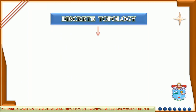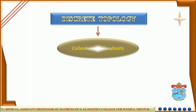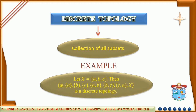Discrete topology is nothing but a collection of all subsets of any non-empty set. For example, consider a set X equal to {A, B, C}. Then the collection containing the empty set, singleton {A}, singleton {B}, singleton {C}, the set {A,B}, the set {B,C}, the set {C,A}, and the set X is a discrete topology, because it contains all the subsets of the set X.